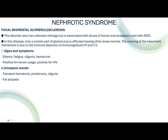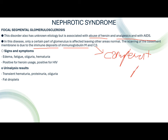Focal segmental glomerulosclerosis also has unknown etiology but is associated with abuse of heroin and analgesics, and with AIDS. Only a certain part of the glomerulus is affected, leaving other areas normal. Scarring of the basement membrane is due to immune deposits of IgM and C3 — C3 being an example of a complement protein. Signs include edema, fatigue, oliguria, hematuria, and if the patient is positive for heroin and HIV. Urinalysis: transient hematuria, proteinuria, oliguria, and fat droplets.